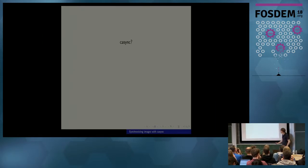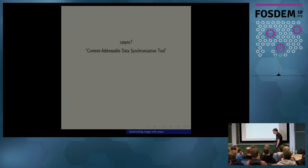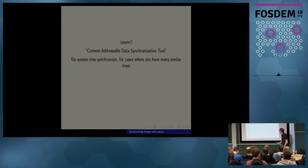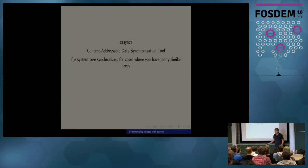So that's the combination. I call it a content-addressable data synchronization tool. It's a little bit like RSync and a little bit like Git, but it's also not like Git and not like RSync. Its primary use case is file systems — it can synchronize file system trees for cases where you have many similar trees. One major use case, the original one I cared about the most initially, is about delivering OS images — meaning container images, VM images, IoT images, whatever you want to call them.